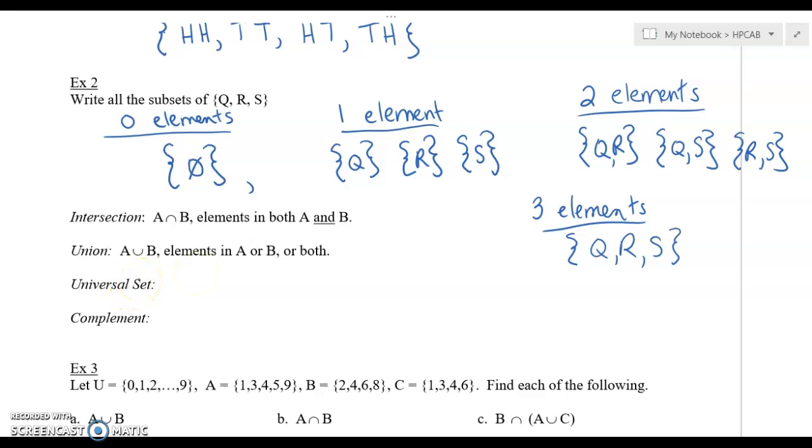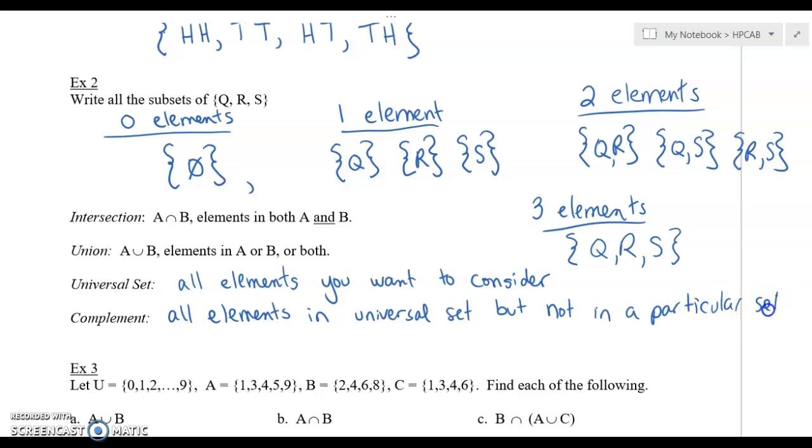The universal set is going to be all the elements you want to consider. And then a complement is going to be all elements in the universal set but not in a particular set.